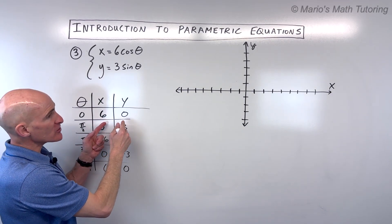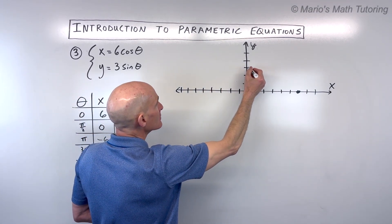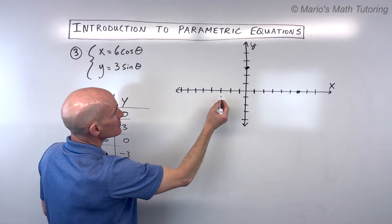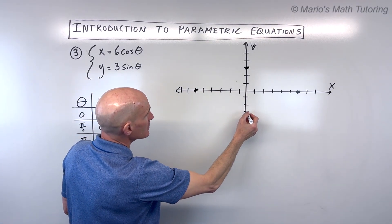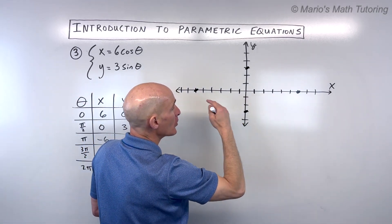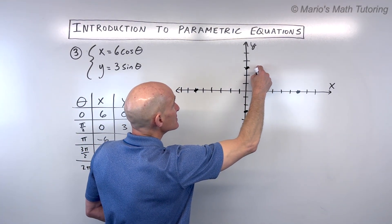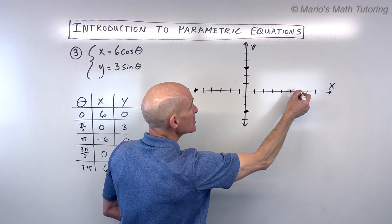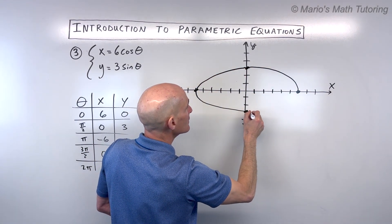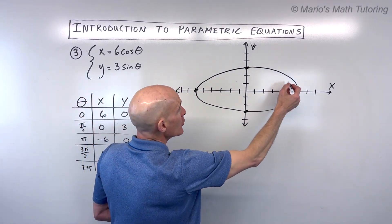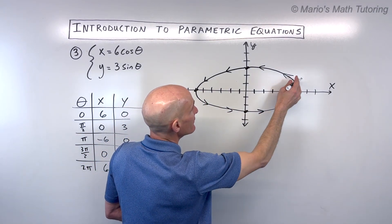We're going to plot these points: six comma zero, zero comma three, negative six comma zero, zero comma negative three, and back to six comma zero. With increasing values of theta, the particle goes counterclockwise — this is an ellipse. We'll put arrows to show the direction with increasing values of theta. That's our graph.